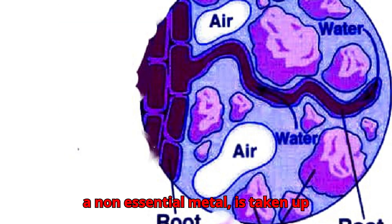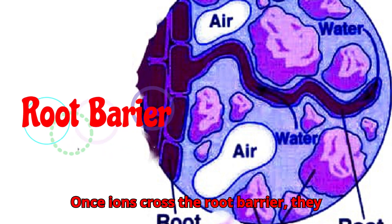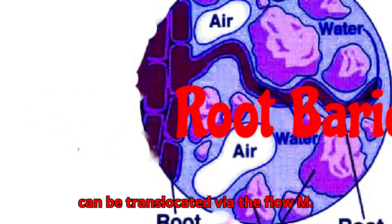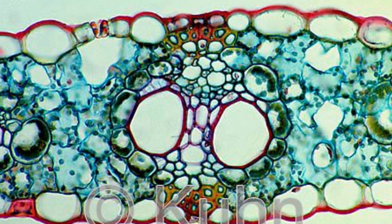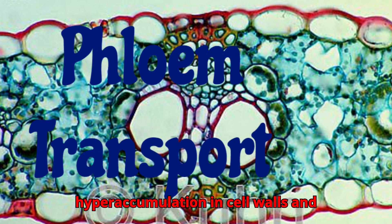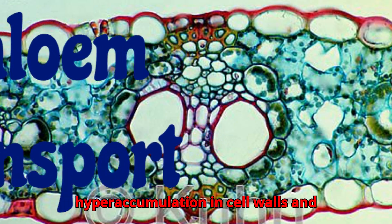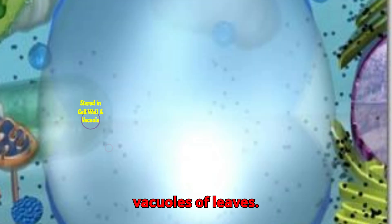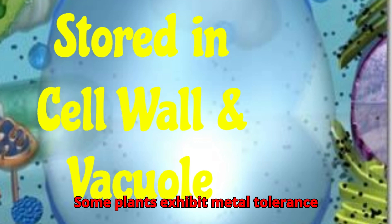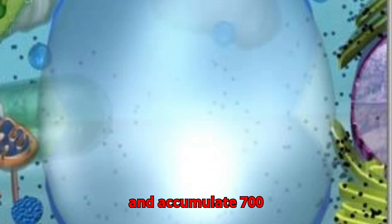Arsenic, a non-essential metal, is taken up through roots and stored. Once ions cross the root barrier, they can be translocated via the phloem. Various transporters contribute to hyperaccumulation in cell walls and vacuoles of leaves, and some plants exhibit metal tolerance and accumulate these metals.